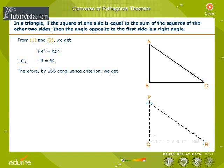Therefore, by SSS congruence criterion, triangle ABC is congruent to triangle PQR. So, ∠B = ∠Q. But ∠Q = 90° by construction. Therefore, ∠B = 90°.